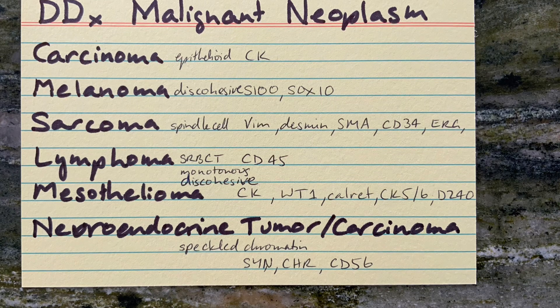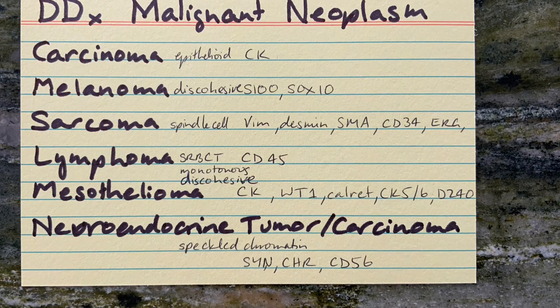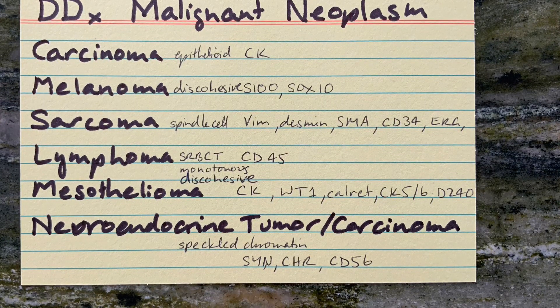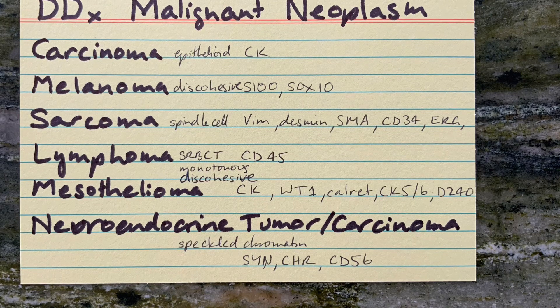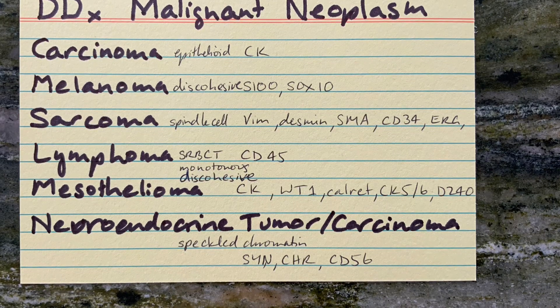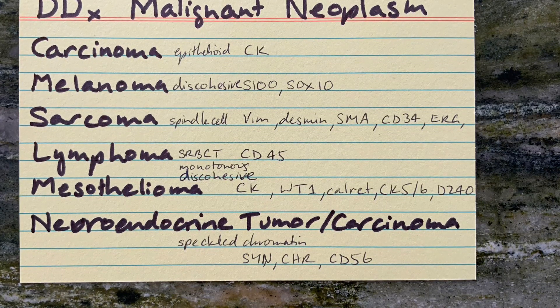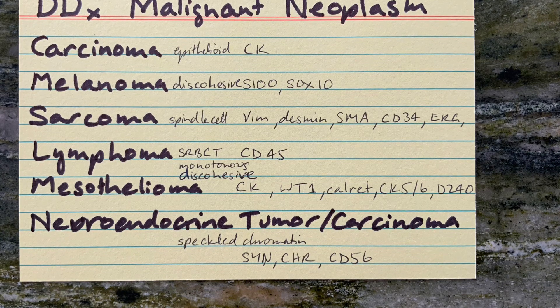Lymphoma has an epithelioid cell shape and is discohesive. They may be monotonous and may present as a small round blue cell tumour. They stain positive with CD45.